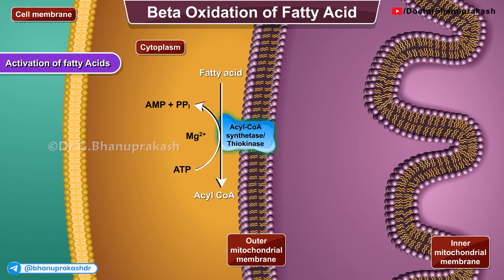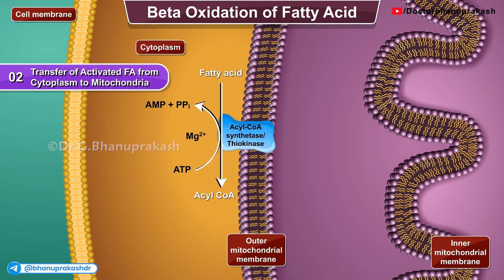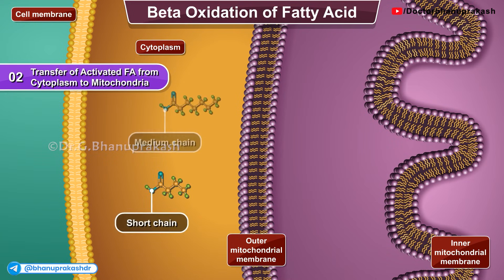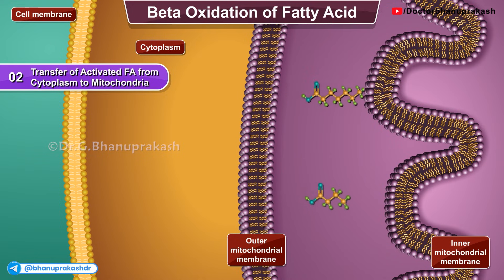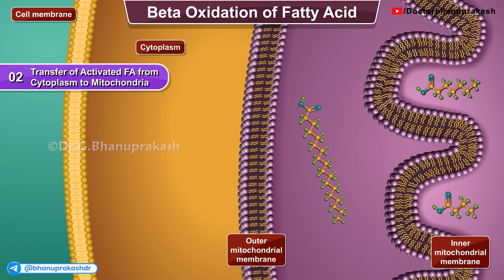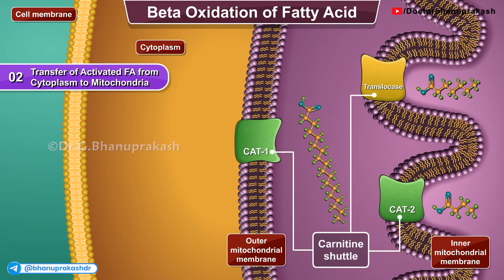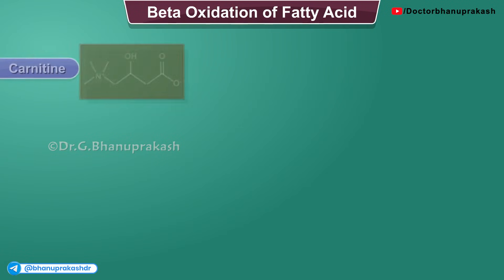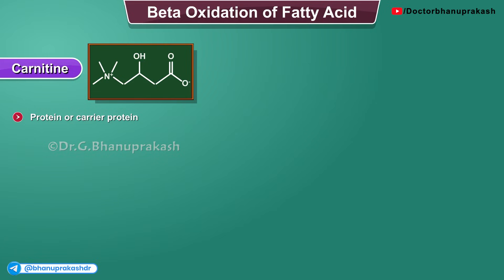The enzyme is acyl-CoA synthetase. Step 2: Transfer of activated fatty acids from cytoplasm to mitochondria. Acyl-CoA is produced in the cytoplasm, but actual beta oxidation occurs in the mitochondria. Fatty acids such as short chain and medium chain do not need carnitine for transport into the mitochondrial matrix. But long chain fatty acids cannot cross the inner mitochondrial membrane, so they are dependent on a transport called the carnitine shuttle. Long chain fatty acids, which are 14 to 20 carbons in length, can only penetrate the inner mitochondrial membrane mediated by carnitine transport. Carnitine is a carrier protein.